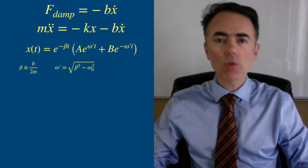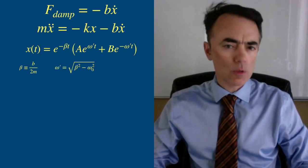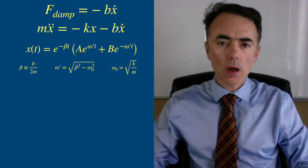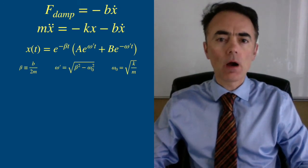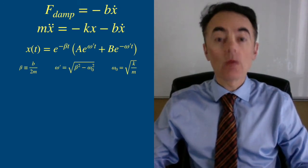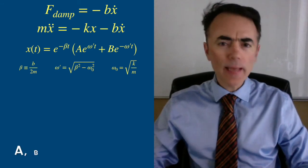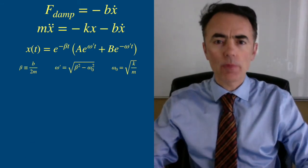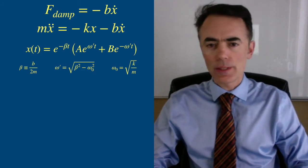Beta is b over 2m. Omega prime is the square root of beta squared minus omega naught squared, being omega naught the natural frequency of the oscillator without damping. A and B are integration constants that can be found with the initial conditions.